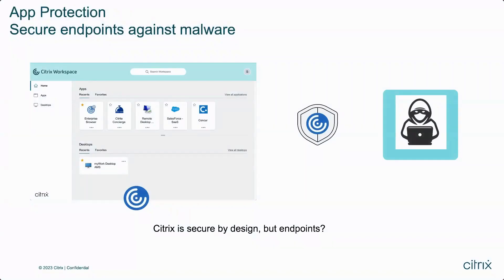App Protection secures corporate data by defending against key logging malware, screen malware, accidental screen sharing, and DLL injection attacks. This enables end users to securely access corporate resources in Citrix Workspace through Windows, Mac, and Linux devices, even if they are unmanaged.